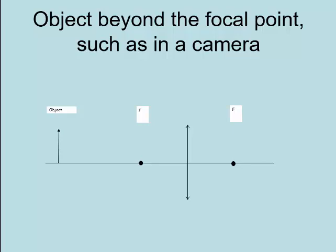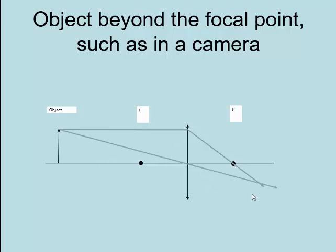First, in something like a camera, the object is drawn as an arrow. This is the focal point on one side of the lens — this is how we draw a converging lens. The focal length is the same on both sides. The first ray leaves parallel to the principal axis, hits the lens, and passes through the focal point. A ray going through the centre of the lens keeps going straight. A ray that comes through the near focal point leaves parallel. All three rays converge at the same point — that is where the image will be — and we have an inverted image.